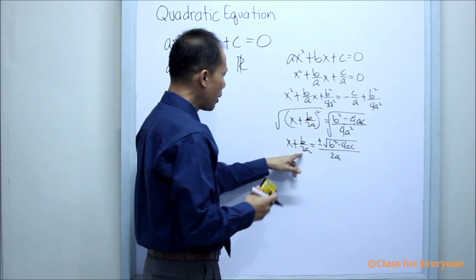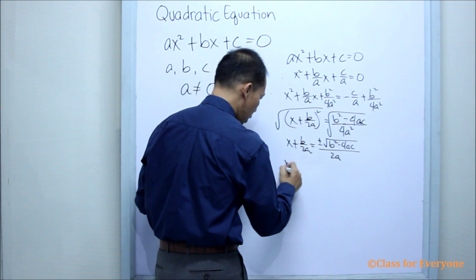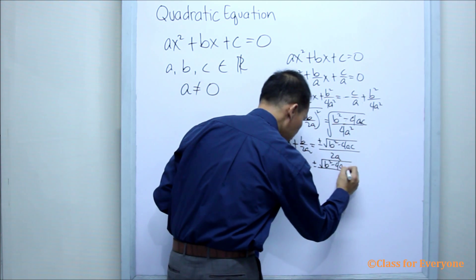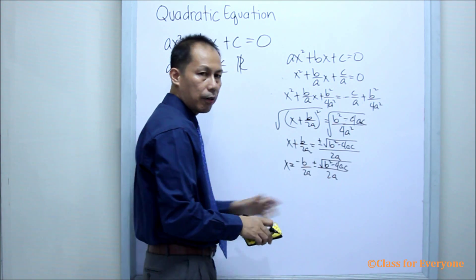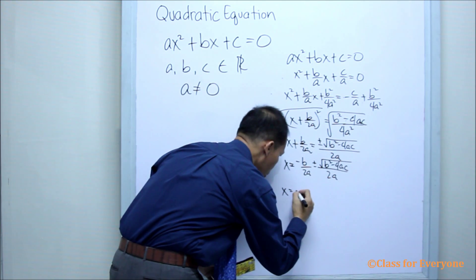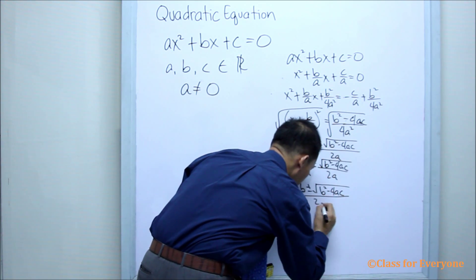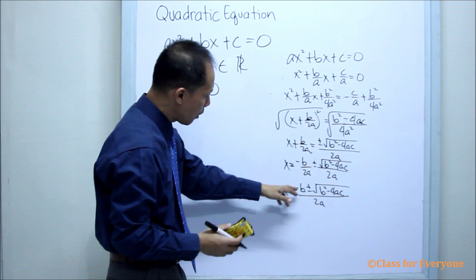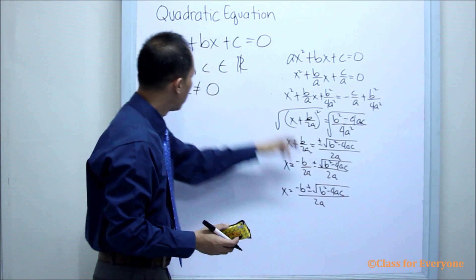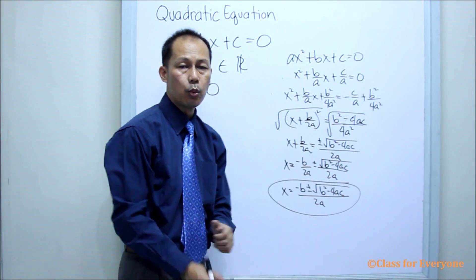Now, transferring the B over 2A — getting the additive inverse, which is negative B over 2A — and adding to both sides, X is now equal to negative B over 2A plus or minus the square root of B squared minus 4AC over 2A. Notice that the denominators are both 2A, so we can combine them into a single fraction: X equals negative B plus or minus the square root of B squared minus 4AC, all over 2A. Remember that A, B, and C are the numerical coefficients of the quadratic equation, and this formula to find the roots is called the quadratic formula.